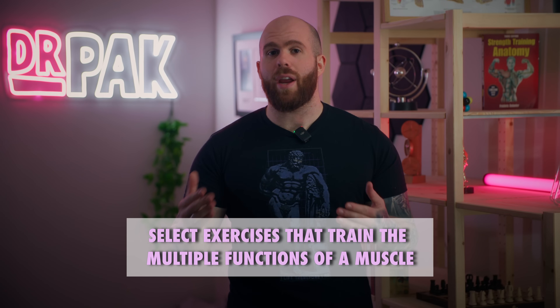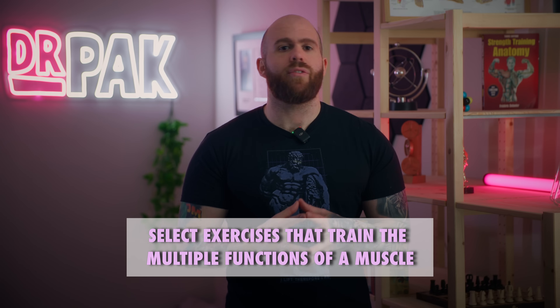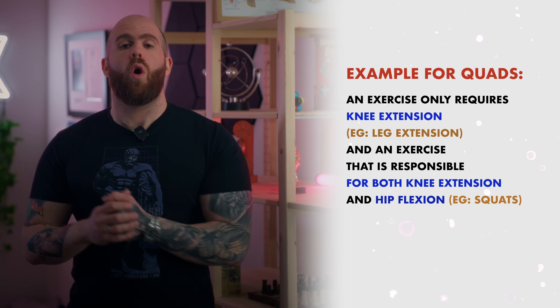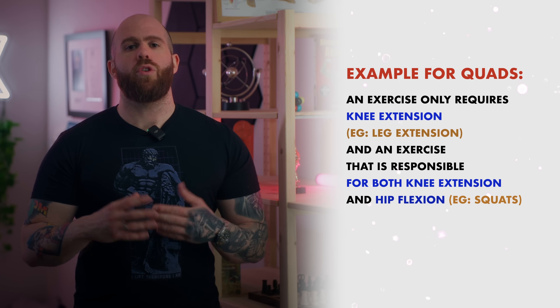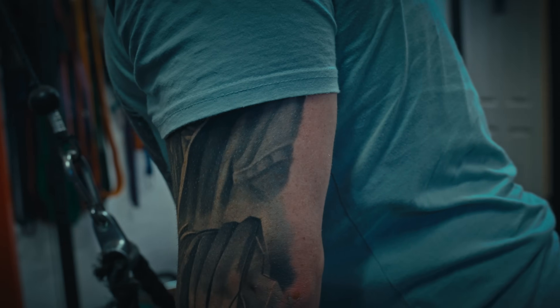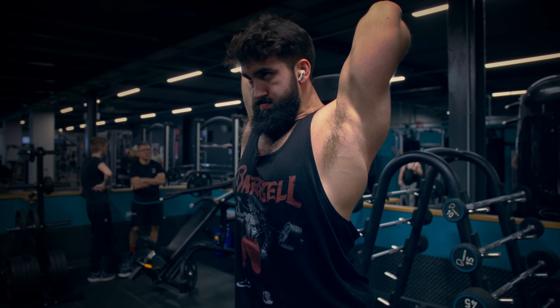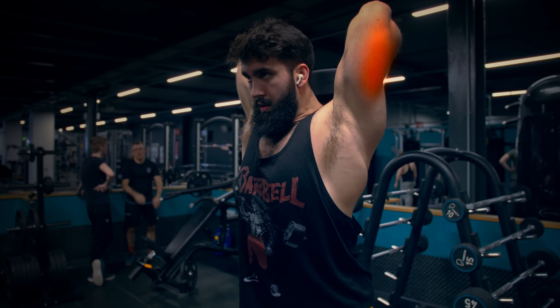After setting your initial training volume at 10 to 15 sets per muscle group per week, pick a bunch of exercises — ideally two to three per muscle group. Select exercises that train the different functions of a muscle if it has multiple functions. I would recommend picking exercises that place a lot of tension on the stretched position. For example, with triceps, you wouldn't necessarily want a tricep kickback where the majority of tension is at the shortened position.